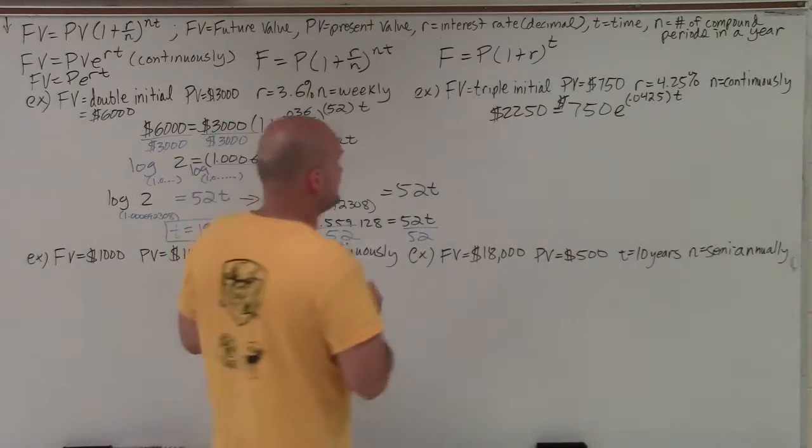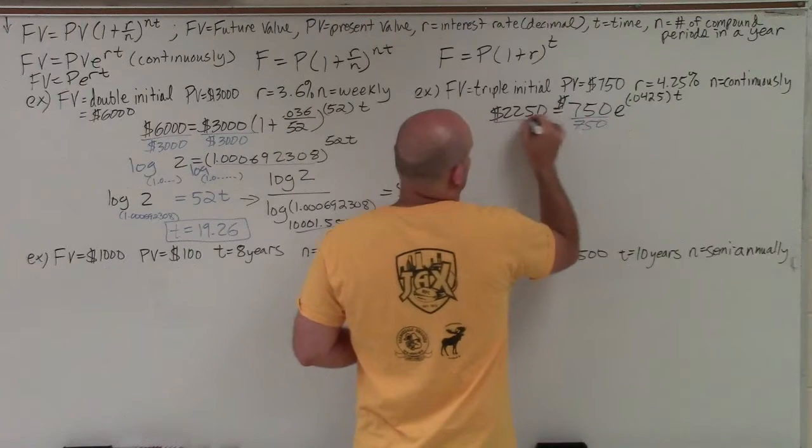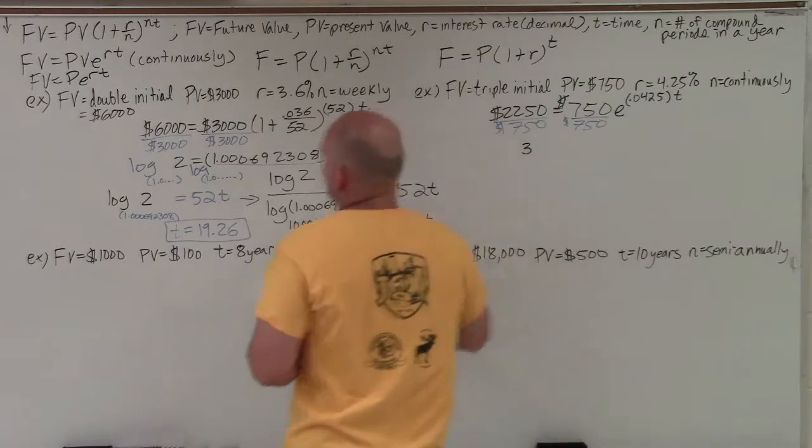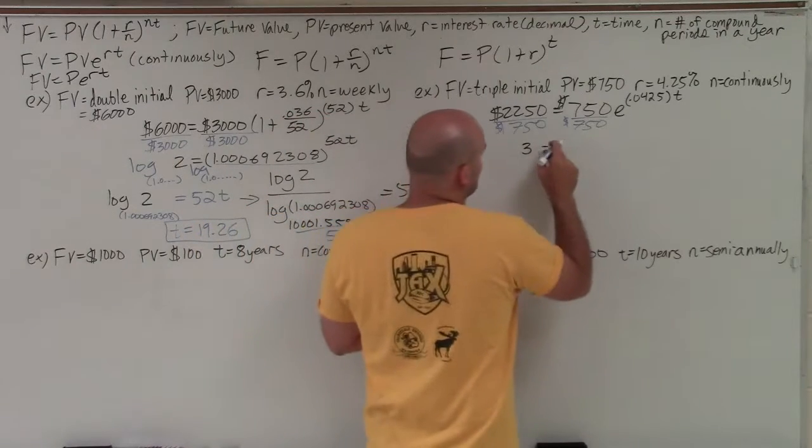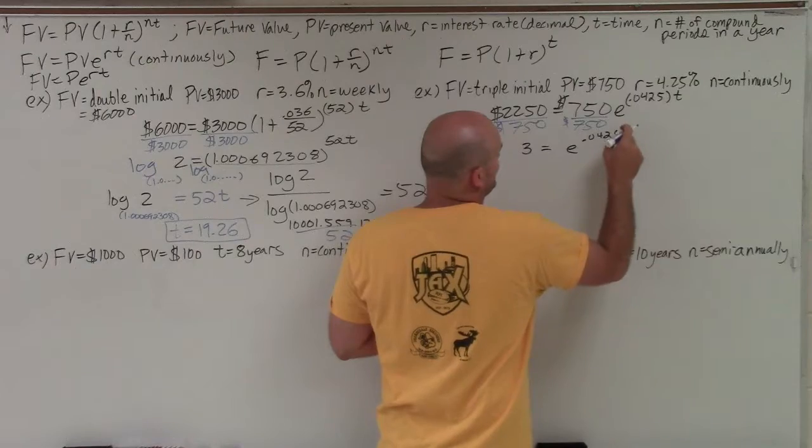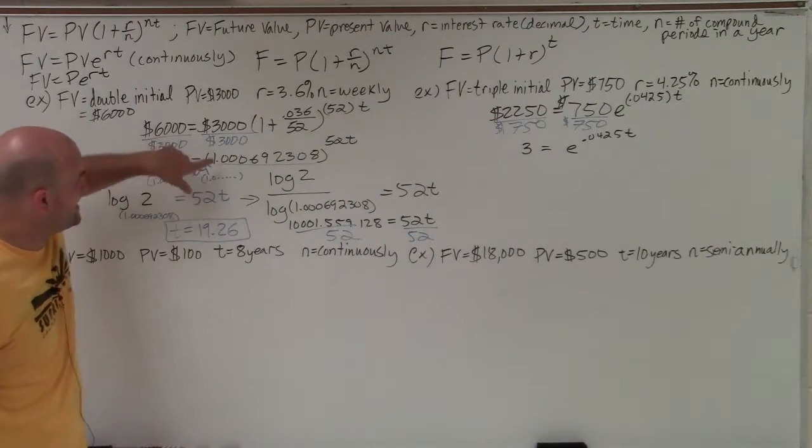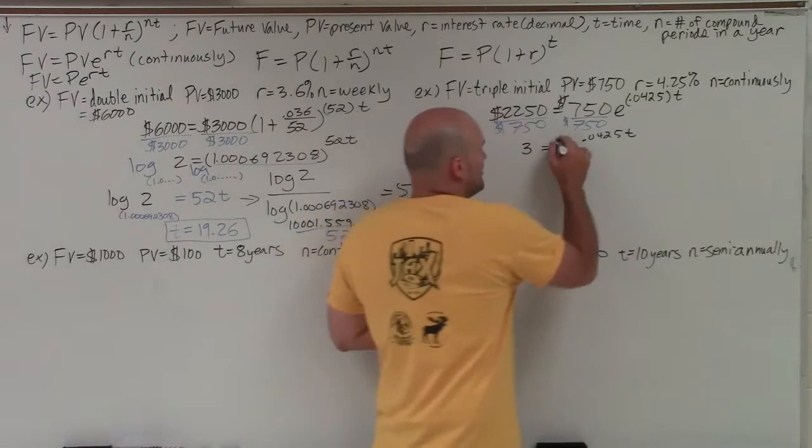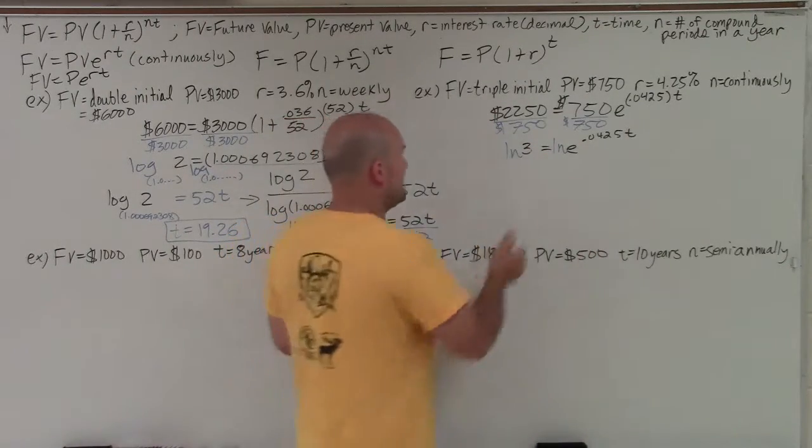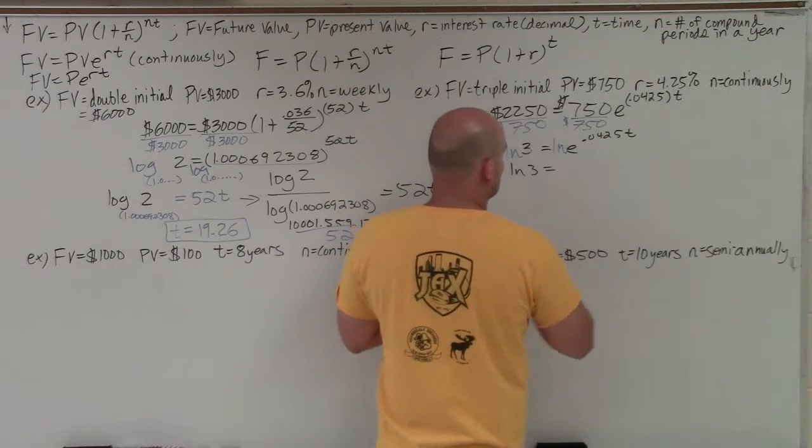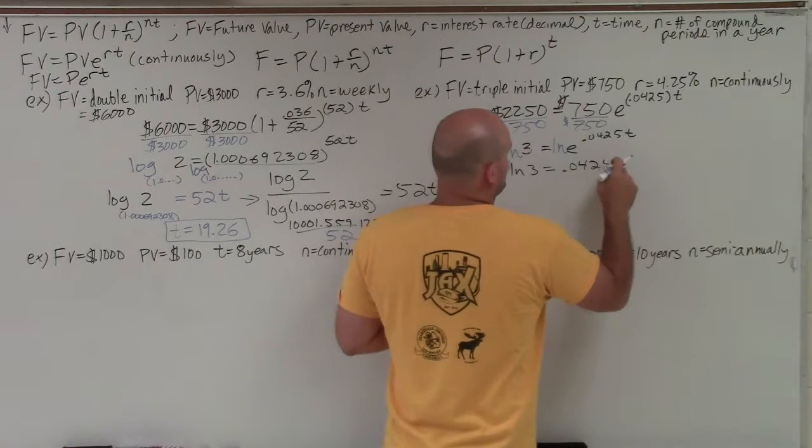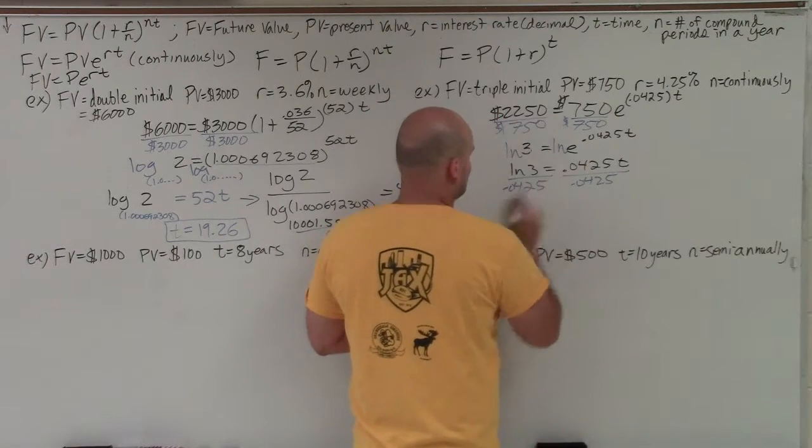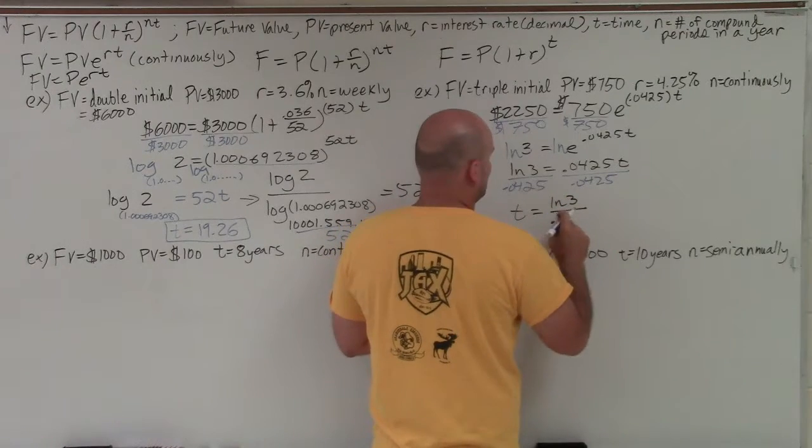OK? So the first thing I'm going to do is divide by 750. And that's going to give me 3. So that gives me 3 equals e to the 0.0425 t. Now to get rid of e, we need to take the log of base e, which is just ln. So I'm going to take the ln, which is base e of both sides. And what that's going to leave me now is ln of 3 is equal to 0.0425 t. To solve for t, I just divide by 0.0425. So therefore, t equals ln of 3 divided by 0.0425.